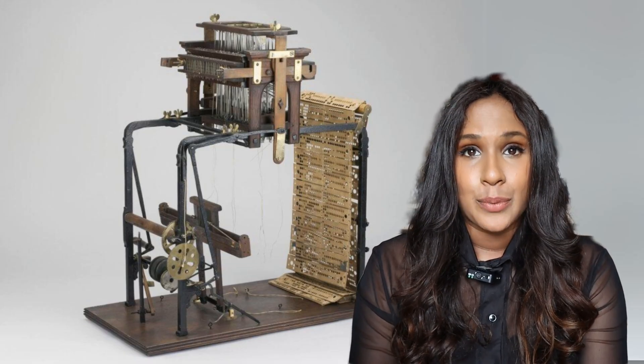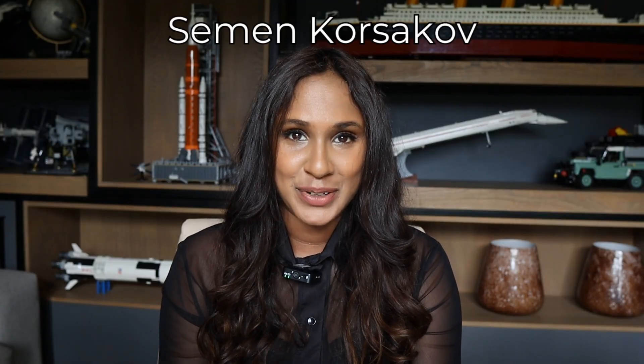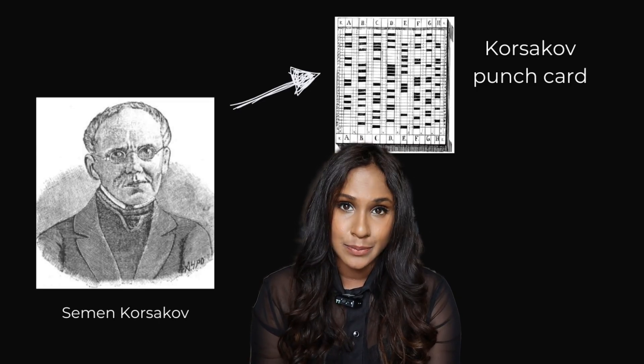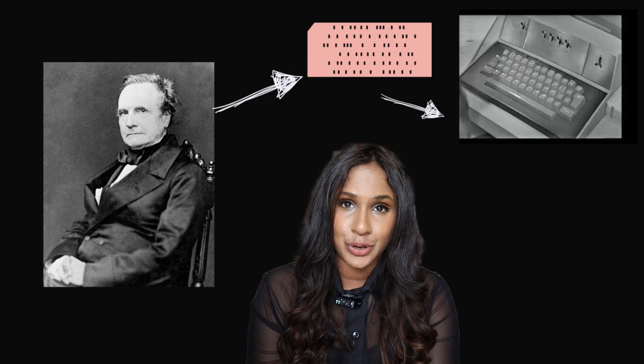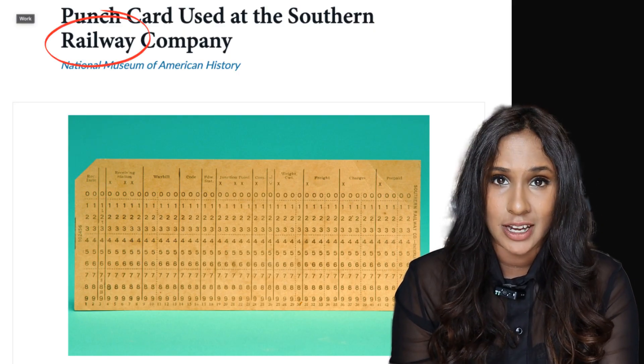The idea of a programmable machine able to automate processes was born in the early 1800s, and methods closely related to programming began to pop up. In 1832, Semyon Korsakov developed techniques for searching through information stored on punch cards, which he used for the Russian police ministry. Around the same time, English mathematician Charles Babbage was impressed by Jacquard's punch card system and proposed that similar cards could control computing machines, although Babbage never turned this idea into a working device. By the late 19th century, punch cards were being used for everyday tasks such as railway conductors tracking passenger destinations and libraries organizing and cataloging books.